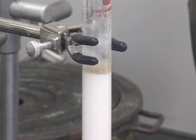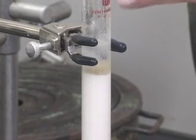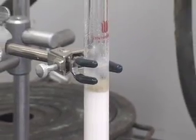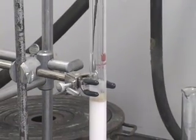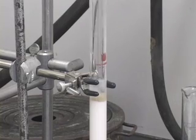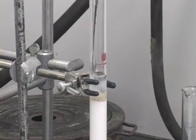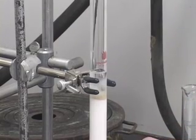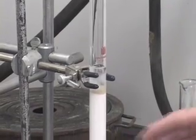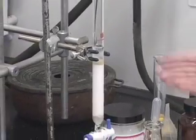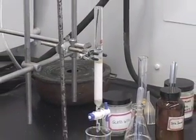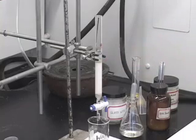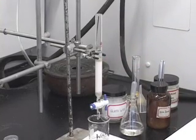Let us rinse the sides of the column again with a little bit more hexane. Let us open this and let the level go down to about where the sand is and then we are ready to add our sample.